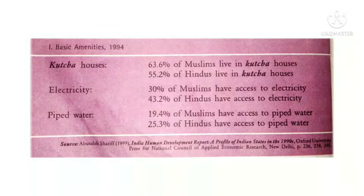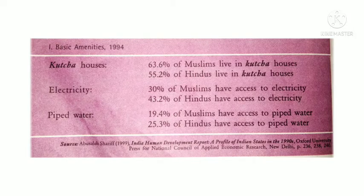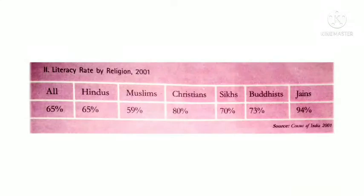Looking at the first table: do Muslims have equal access to basic amenities such as kacha houses, electricity, and piped water? The next table asks: which religious group has the lowest literacy rate in 2001? According to literacy rate by religion: 65% for all communities, 65% for Hindus, 59% for Muslims, 80% for Christians, 70% for Sikhs, 73% for Buddhists, and 94% for Jains.